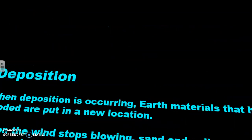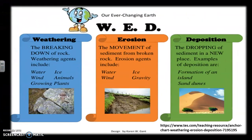Now let's review. Weathering is the breaking down of rock. Weathering agents include water, wind, ice, animals, and growing plants. Erosion is the movement of sediment from broken rocks. Erosion agents include water, wind, ice, and gravity. Deposition is the dropping of sediment in a new place. Examples of deposition are the formation of an island and a sand dune.